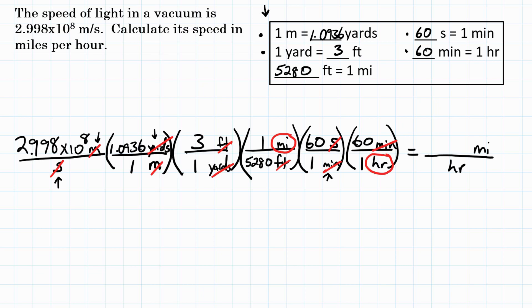So now that we know our units are going to convert to exactly what we need, we can do the math. In your calculator, you are going to type 2.998 times 10 to the eighth. We are going to multiply by the top of each conversion factor and divide by the bottom.